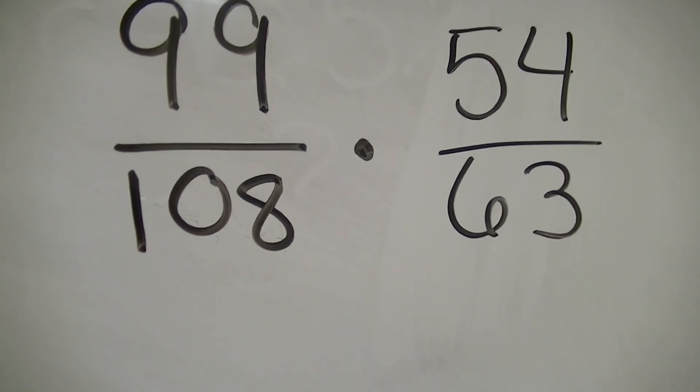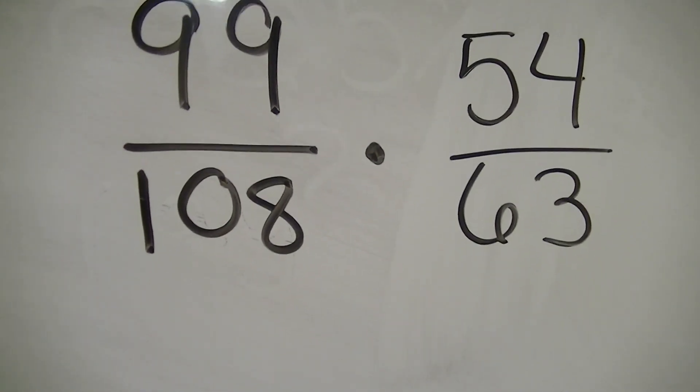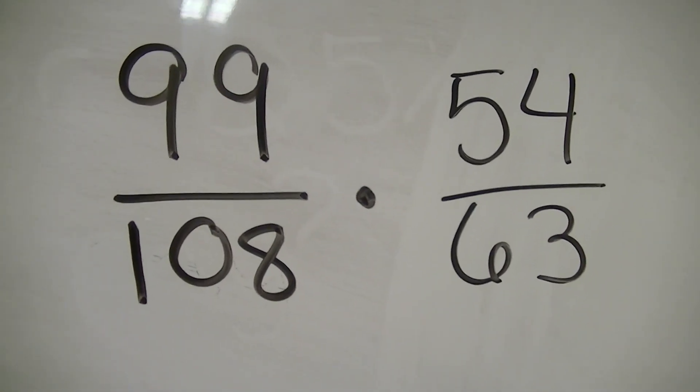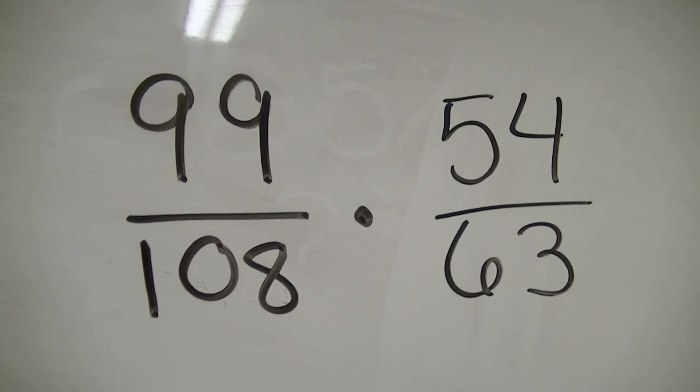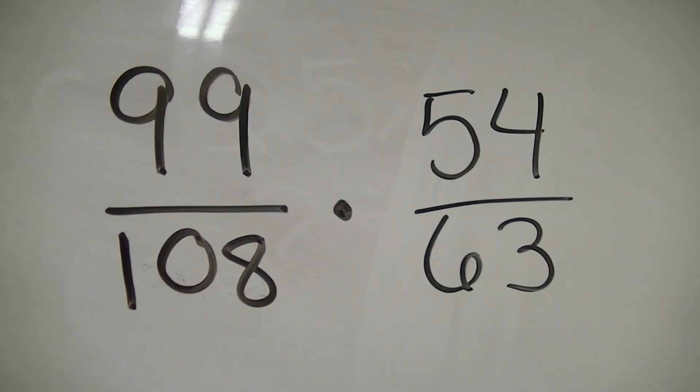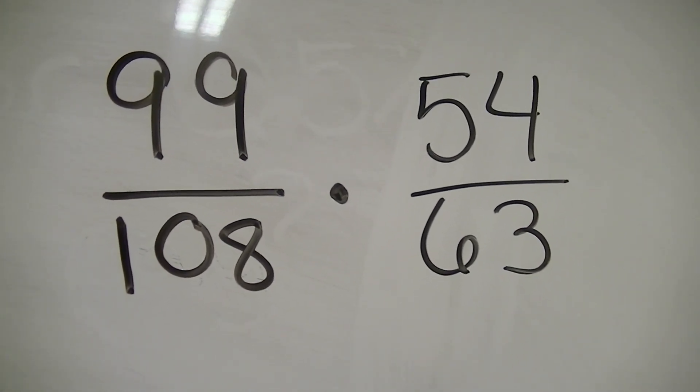9 plus 9, we said that was 18. 1 plus 8, that equals 9. 1 plus 0 plus 8, that equals 9. 5 plus 4, that equals 9. 6 plus 3, that equals 9. All of those numbers are divisible by 9, so let's divide them by 9 ahead of time.